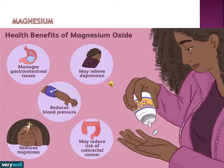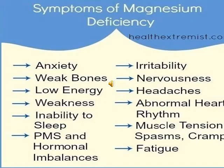Health benefits of magnesium include: it relieves depression, manages gastrointestinal issues, reduces blood pressure, reduces fatigue, and may reduce the risk of colorectal cancer. Symptoms of magnesium deficiency include anxiety, weak bones, low energy levels, inability to sleep, hormonal imbalances, irritability, nervousness, headaches, abnormal heart rhythm, muscle tension, spasms and cramps, and fatigue.